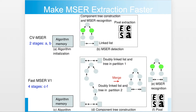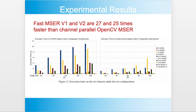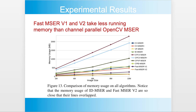We run MSER extraction in parallel to further accelerate MSER extraction. Fast MSER V2 is another parallel algorithm. V1 and V2 are 2725 times faster than parallel OpenCV MSER, and they take less running memory than parallel OpenCV MSER.